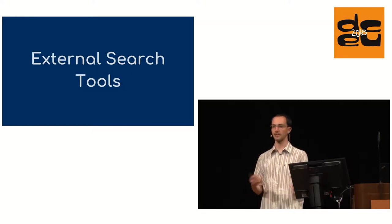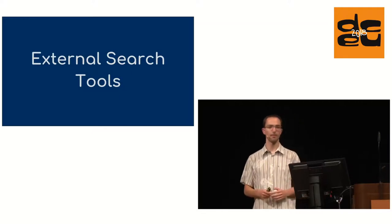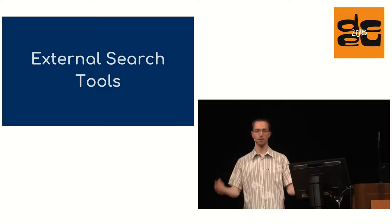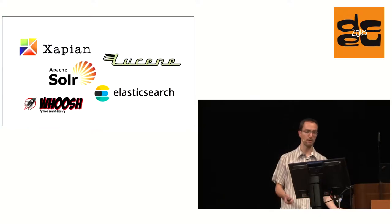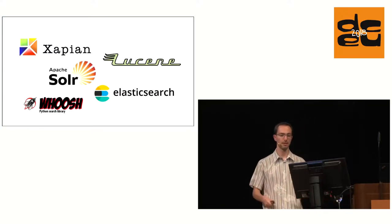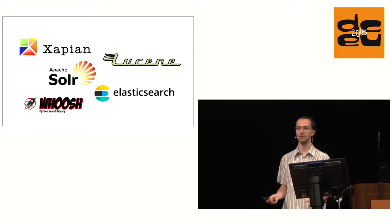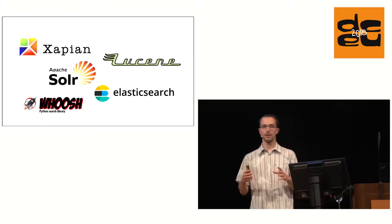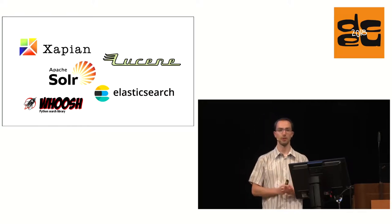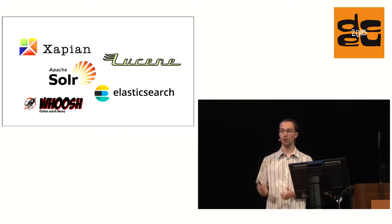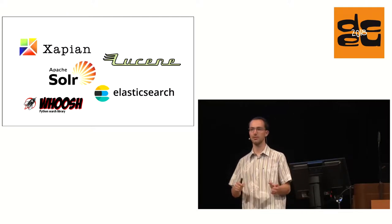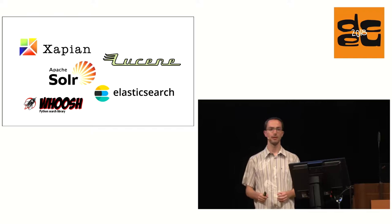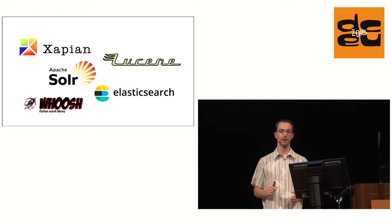Well, we go and use external tools. They do their job properly and are built for doing full-text search and other kinds of searches. To name a few: Xapian, Solr, Lucene, Whoosh, Elasticsearch — there are heaps more out there. They are great, they do their job properly. They all have their benefits and problems, their quirks, and it takes a bit to get used to them and understand them. But once you get a hang of them, great.